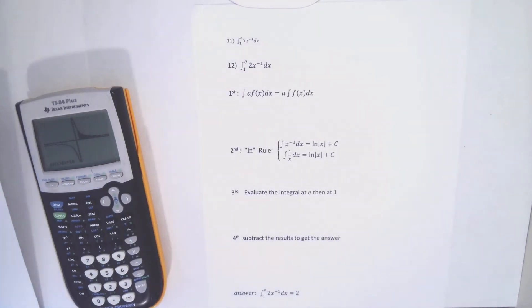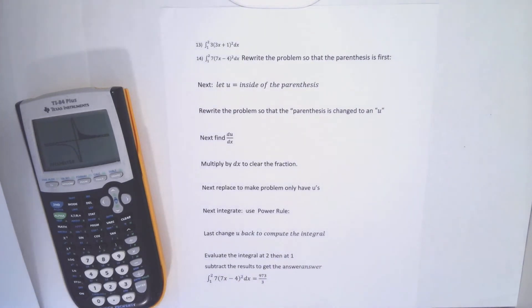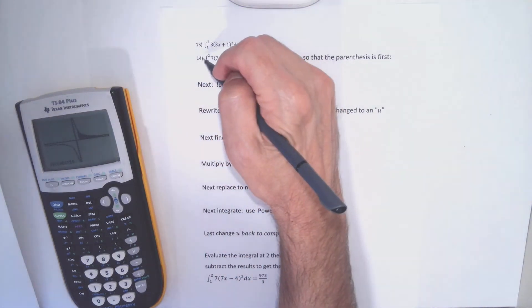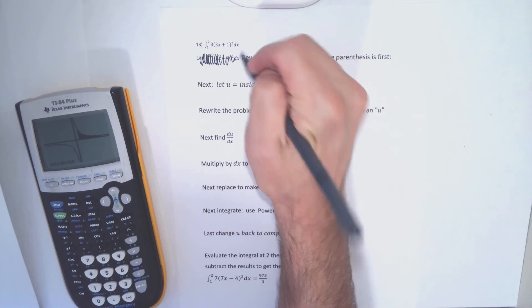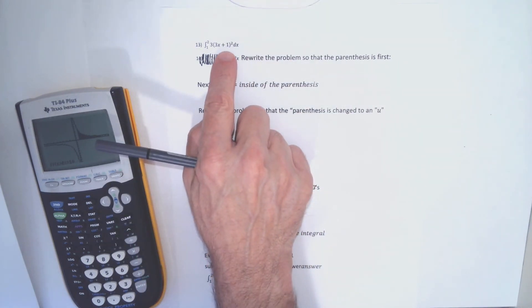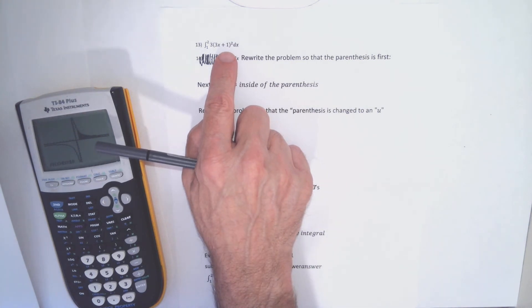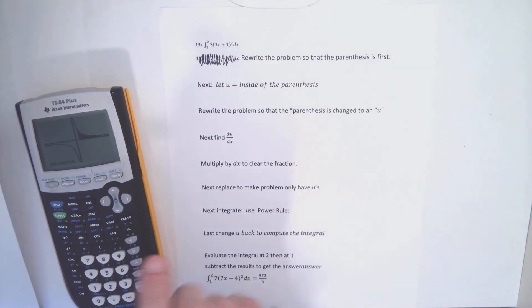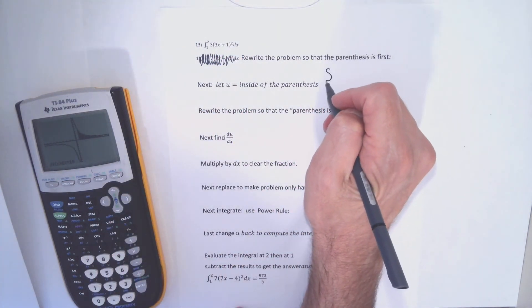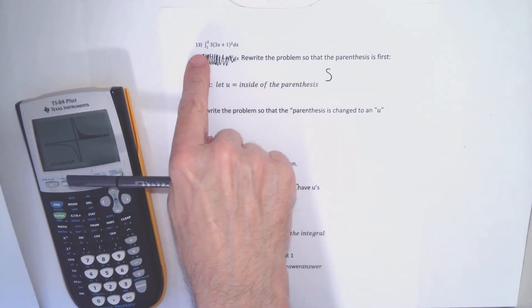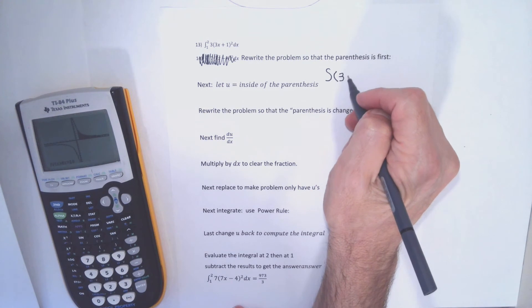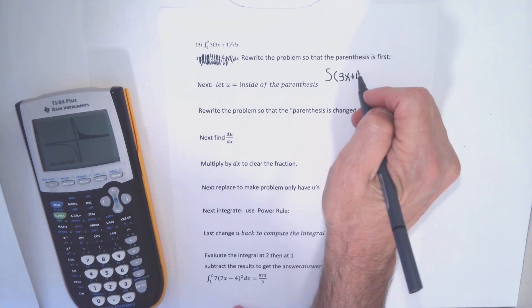I'm going to skip number 12 — that's just another ln problem — and get into a u-substitution. Let's do one of your homework problems: problem 13. I won't have an answer for it, but we can check on our calculator. I have to do the integral and I have a parenthesis with an exponent. I'm going to pretend I can't clear that parenthesis, though I could. Generally, parentheses with exponents we do with u-substitution. I'll just introduce the 1 and 2 when needed.